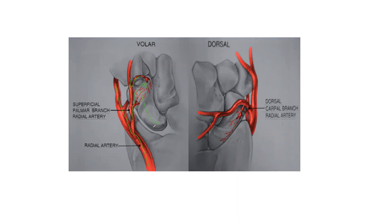The entire scaphoid — this is the proximal part where it articulates with the radius, and the distal end where it articulates with the trapezium. The blood vessels enter the scaphoid through the distal segment. The constricted portion of the scaphoid is called the waist or neck of the scaphoid. Among the carpal bones, the scaphoid is the most frequently fractured, and the waist is the most frequently fractured segment. When there is a fracture at the waist of the scaphoid, the proximal segment is devoid of blood supply and undergoes avascular necrosis.